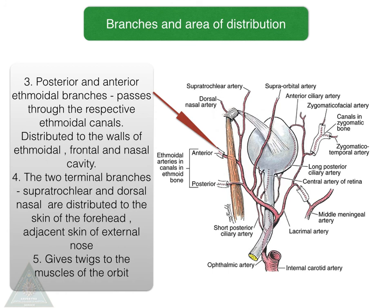The posterior and anterior ethmoidal branches pass through the respective ethmoidal canals and are distributed to the walls of the ethmoidal, frontal, and nasal cavity. The two terminal branches, the supratrochlear and the dorsal nasal, are distributed to the skin of the forehead and adjacent skin of the external nose. It also gives twigs to the muscles of the orbit.